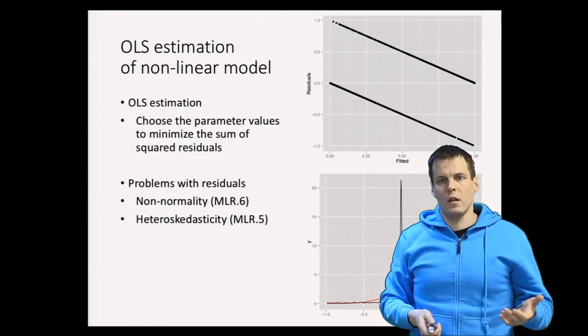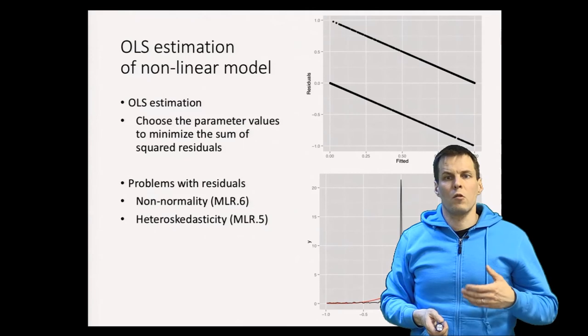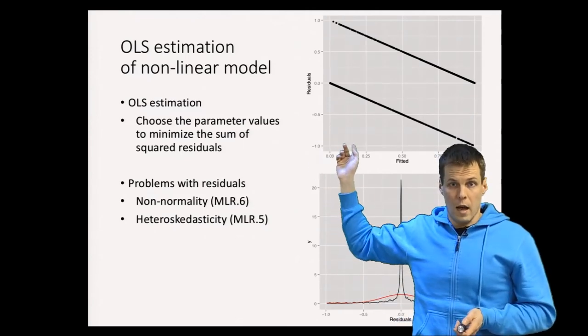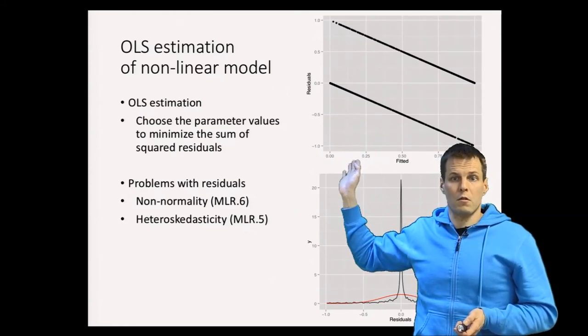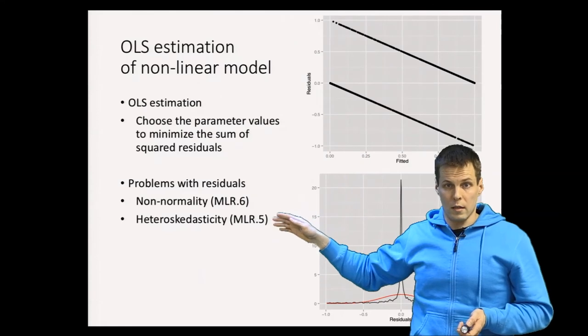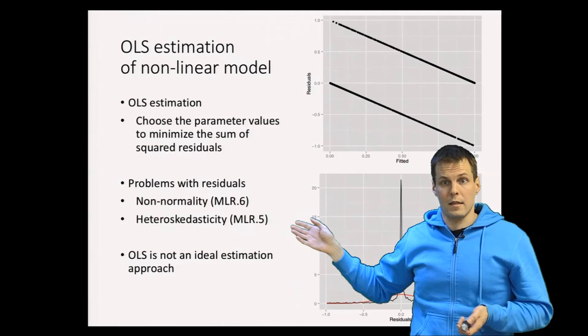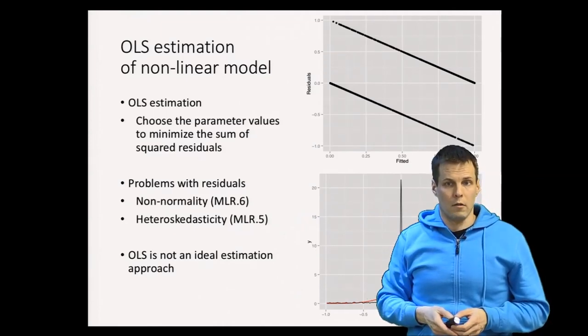Whether that's a big deal or not, we could use robust standard errors, but there are also some computational difficulties when we try to apply least squares approach to this kind of problem. Because of those computational difficulties and because OLS is not ideal anyway due to violation of these assumptions, we estimate this using a different approach called maximum likelihood estimation.